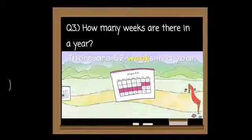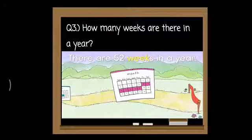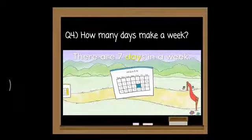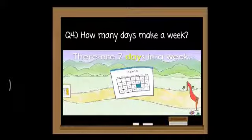How many weeks are there in a year? There are fifty-two weeks in a year. How many days make a week? There are seven days in a week. Seven days make a week.